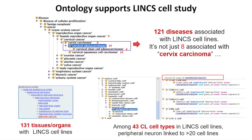Here's a concrete application example: if you are looking for cell lines from a cervical carcinoma background and search only for 'cervical carcinoma,' you find only eight cell lines. However, cervical adenocarcinoma is a cervical carcinoma, and cervical clear cell adenocarcinoma is also a subclass — so by querying subclasses, you can find more cell lines that meet your needs. Similarly, you can use semantic queries based on tissue, organ, or cell line type, enabling a lot of useful applications.